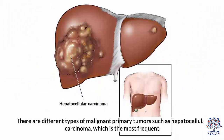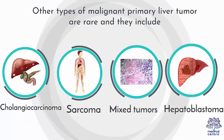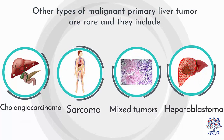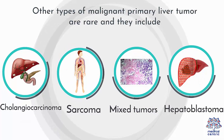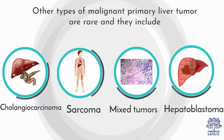There are different types of malignant primary tumors, such as hepatocellular carcinoma, which is the most frequent. Other types of malignant primary liver tumor are rare and they include cholangiocarcinoma, sarcoma, mixed tumors, and hepatoblastoma.